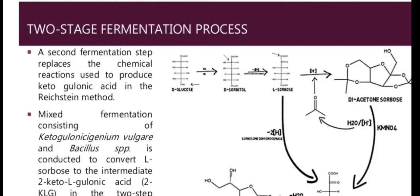Two-stage fermentation was adopted over the Reichstein method due to these disadvantages. In this method, the chemical reaction steps used to produce keto-gluconic acid in the Reichstein method are replaced. A mixed fermentation consisting of Ketogulonicigenium and Bacillus species is conducted to convert L-sorbose to the intermediate 2-keto-L-gulonic acid. This intermediate is then converted directly to the vitamin C structure.